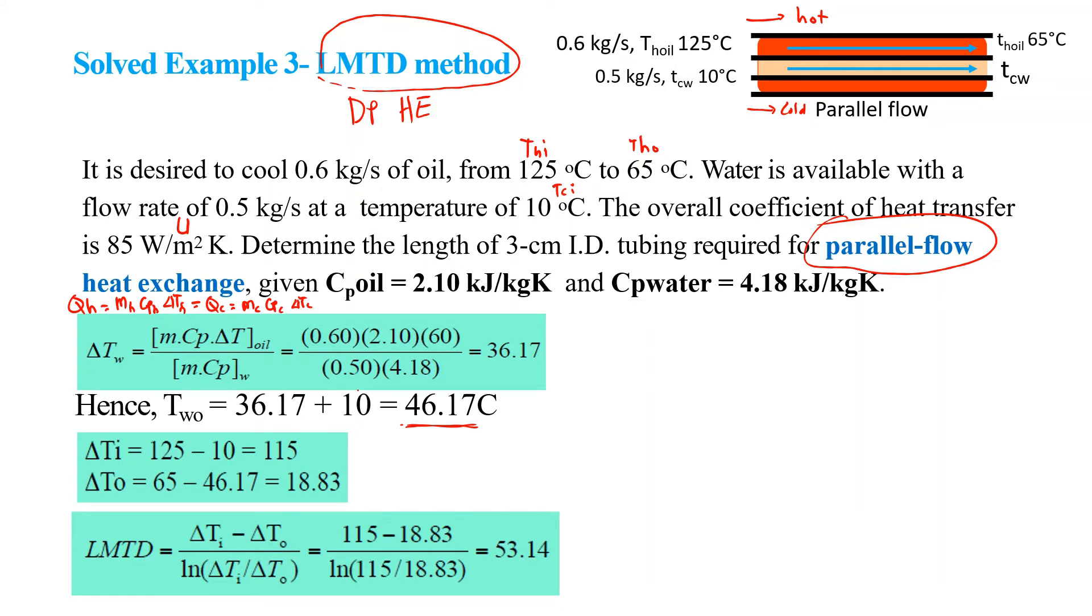What's different is now we have ΔTi on the inlet side of the hot stream. ΔTi equals 125 minus 10, and then ΔTo equals 65 minus 46.17 degrees Celsius.